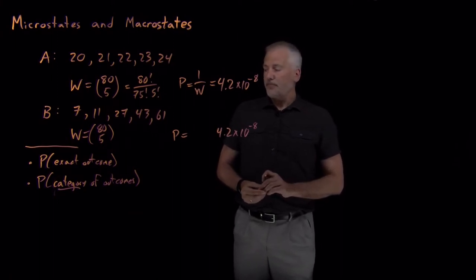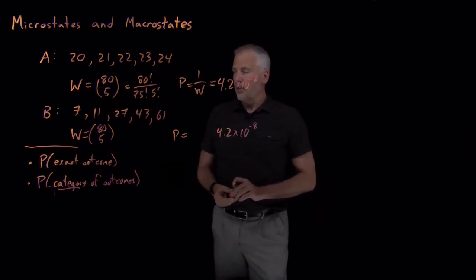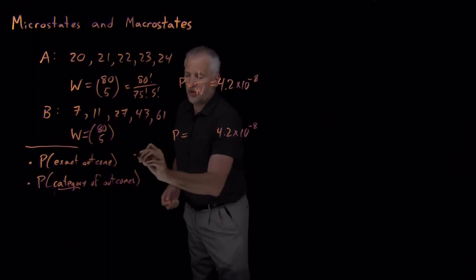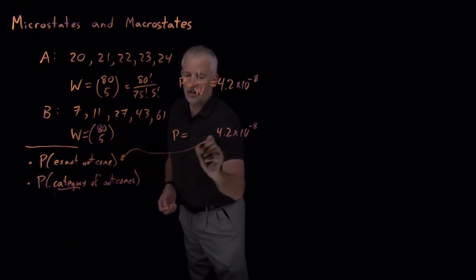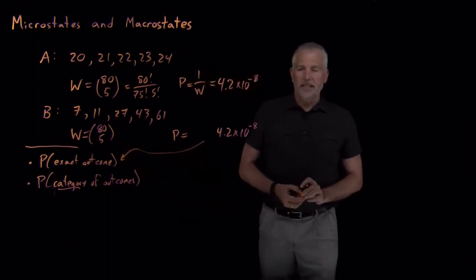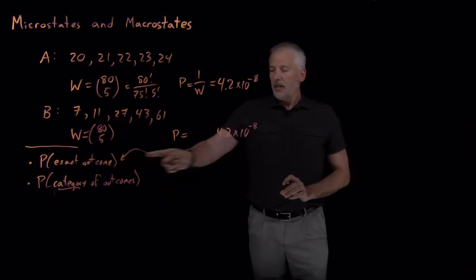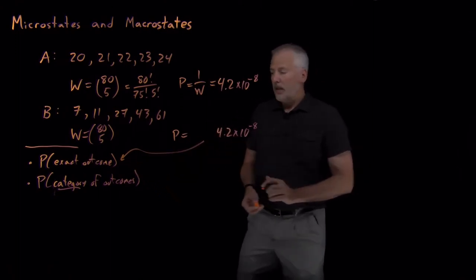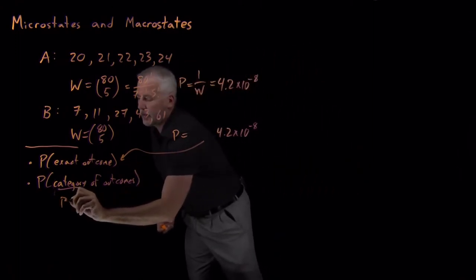So we can distinguish between those. We've seen that probability of the exact outcome might be a very small number. If we calculate, for example, the probability of five consecutive numbers.